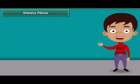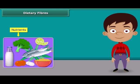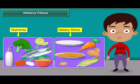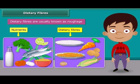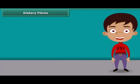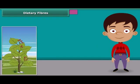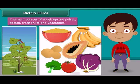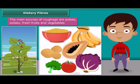Dear friends, do you know that besides nutrients, dietary fiber also plays an important role in our body? They are usually known as roughage. Roughage does not provide any nutrition to our body but adds bulk. They are found only in plants — pulses, potato, fresh fruits, and vegetables are the main sources of roughage. This helps our body to get rid of undigested food.